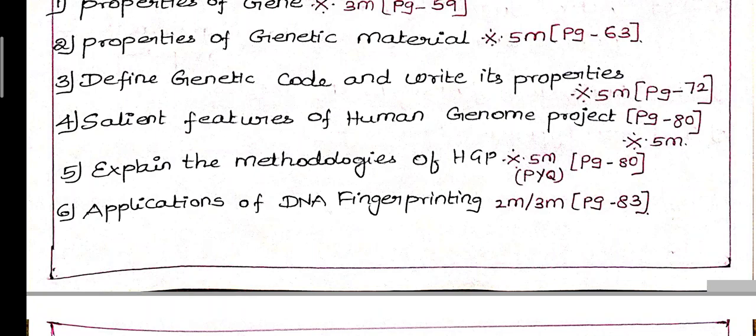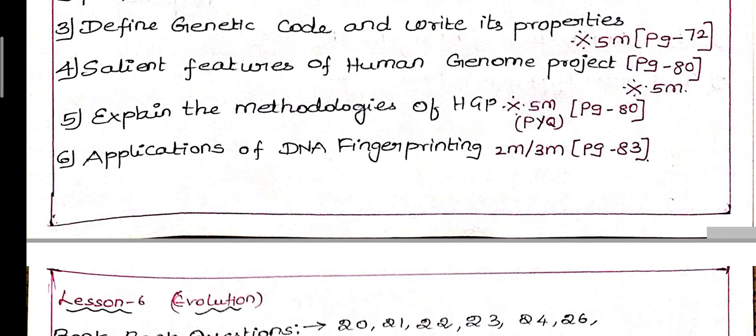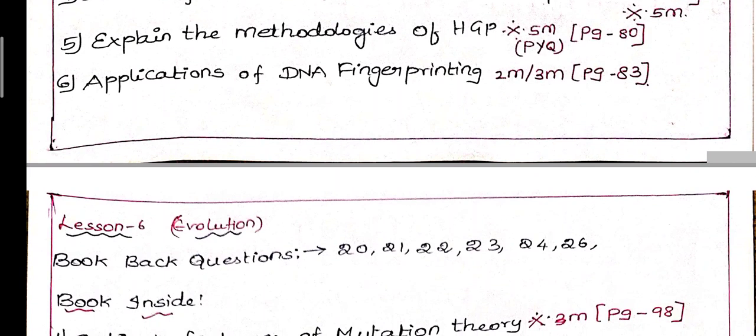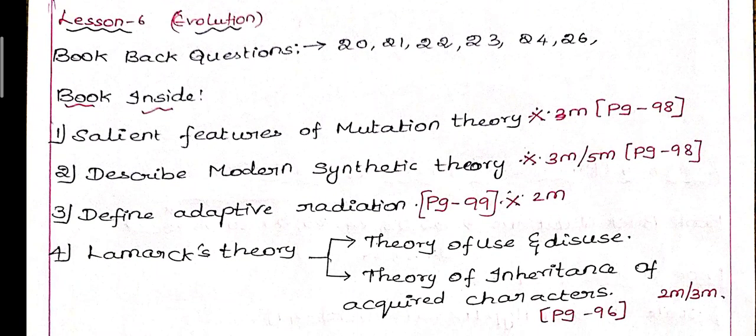Fifth question: Explain the methodologies of HGP. There's a paragraph with goals and salient features on the left side bottom. This is a previous year 5-mark question. Next question: Applications of DNA fingerprinting, sometimes 2-mark or 3-mark, on page 83.